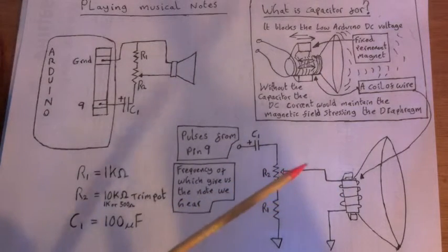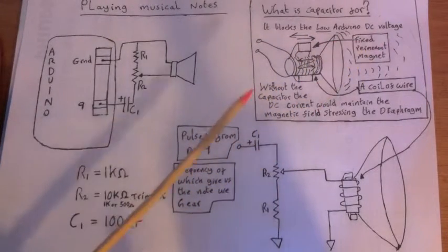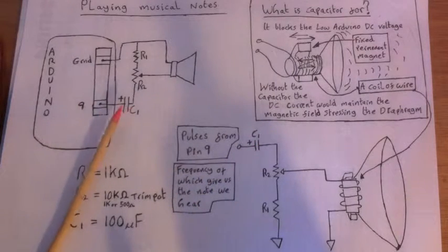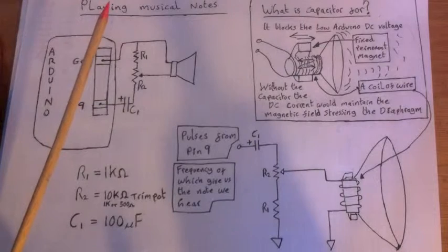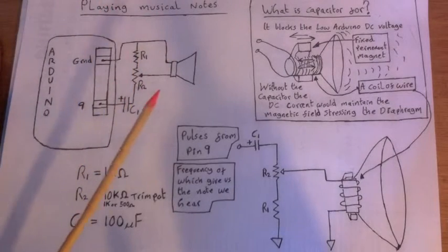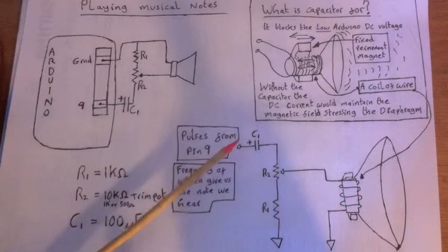So what's the reason for the capacitor? Well, what it does is it blocks the low Arduino DC voltage. So what I mean by that is, as I said before, the Arduino's low voltage is between about 2.5 to about zero. So it's still putting out a DC voltage. Now what does that mean? The way a speaker works is relevant here.